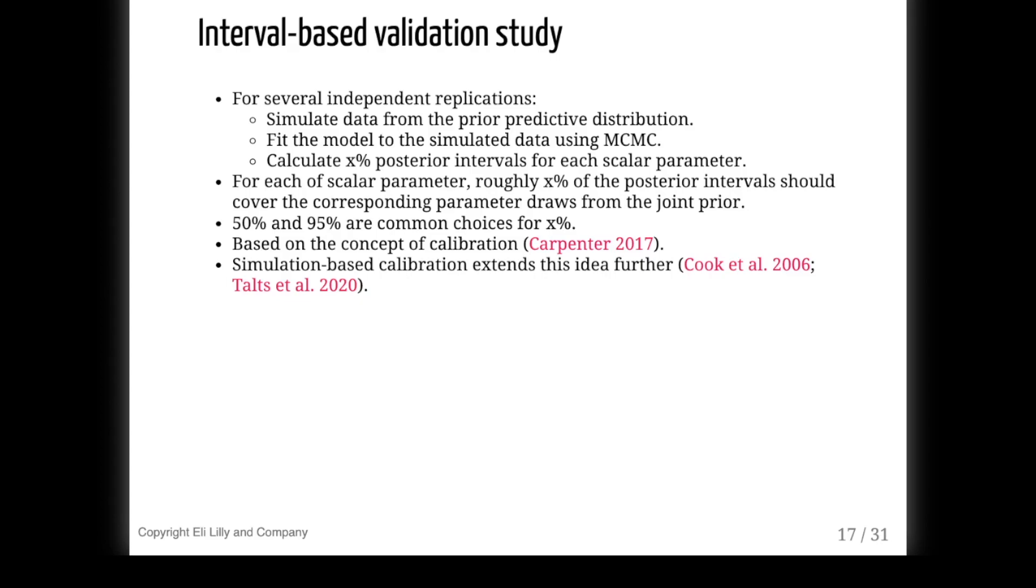One way to do that is with calibration. The idea is to simulate thousands of datasets from the prior predictive distribution, analyze each dataset with the model, and find out how well the posterior parameter samples agree with the parameter samples from the prior. So if we compute a 50% posterior interval for each simulation, then 50% of those intervals should contain the corresponding prior draws of that parameter. Likewise for 95% intervals or whatever credible level you choose. If coverage is nominal, that's evidence that the analysis model and the data generating model agree. In practice, I found this exercise to uncover a lot of bugs.